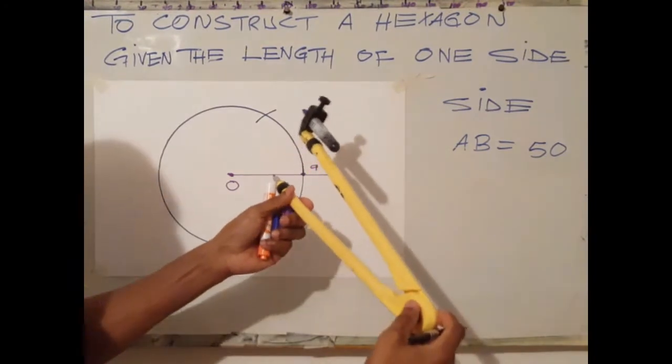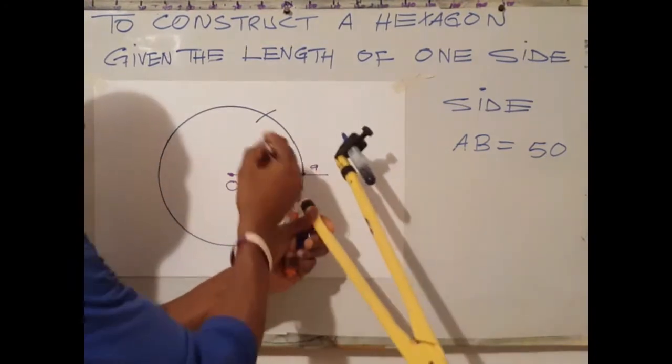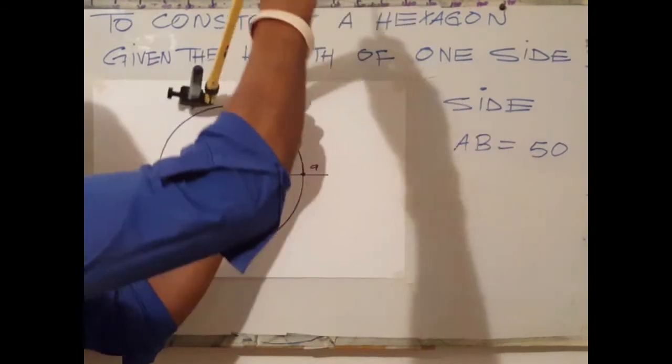At a point where the arc cuts the circumference, use that point as center, scrub the next arc.